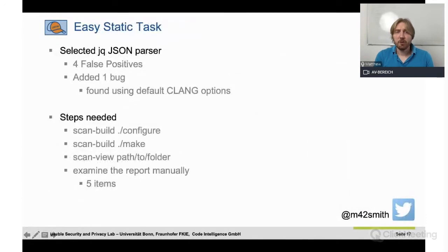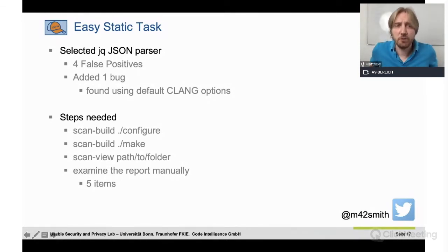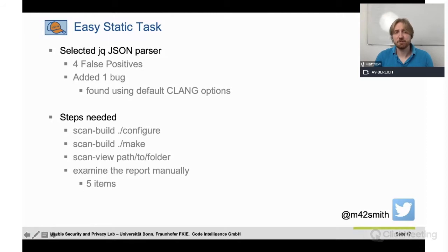For the easy task, we selected JQ — the JSON parser — which had four false positive reports, and we added one bug that would be found using the Clang static analyzer with default options. The steps needed were: use scan-build to configure the project, make the project, view the results, and get a report with five items to manually review and decide whether each is a true bug or not.